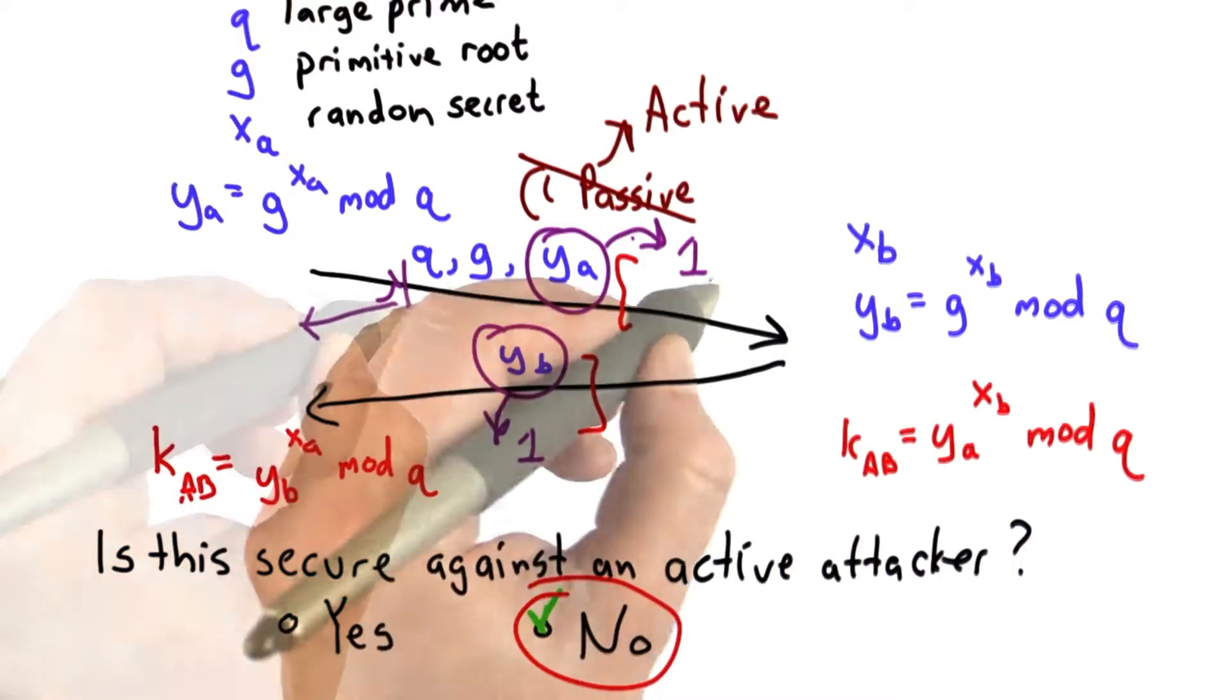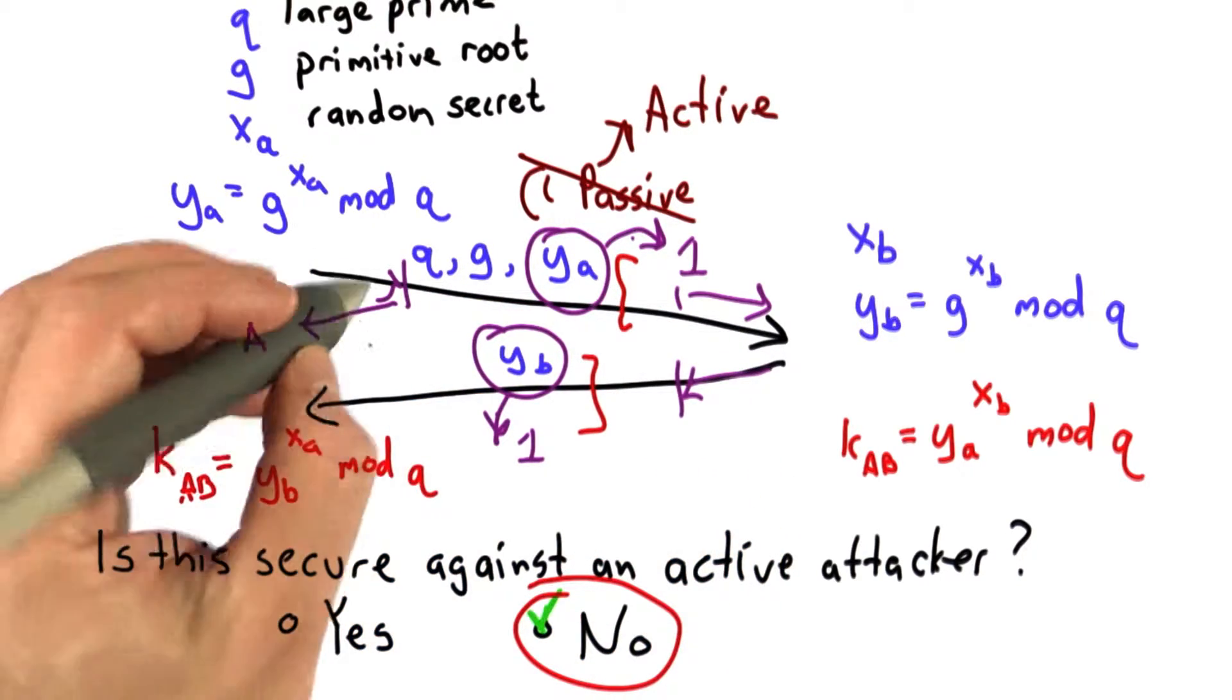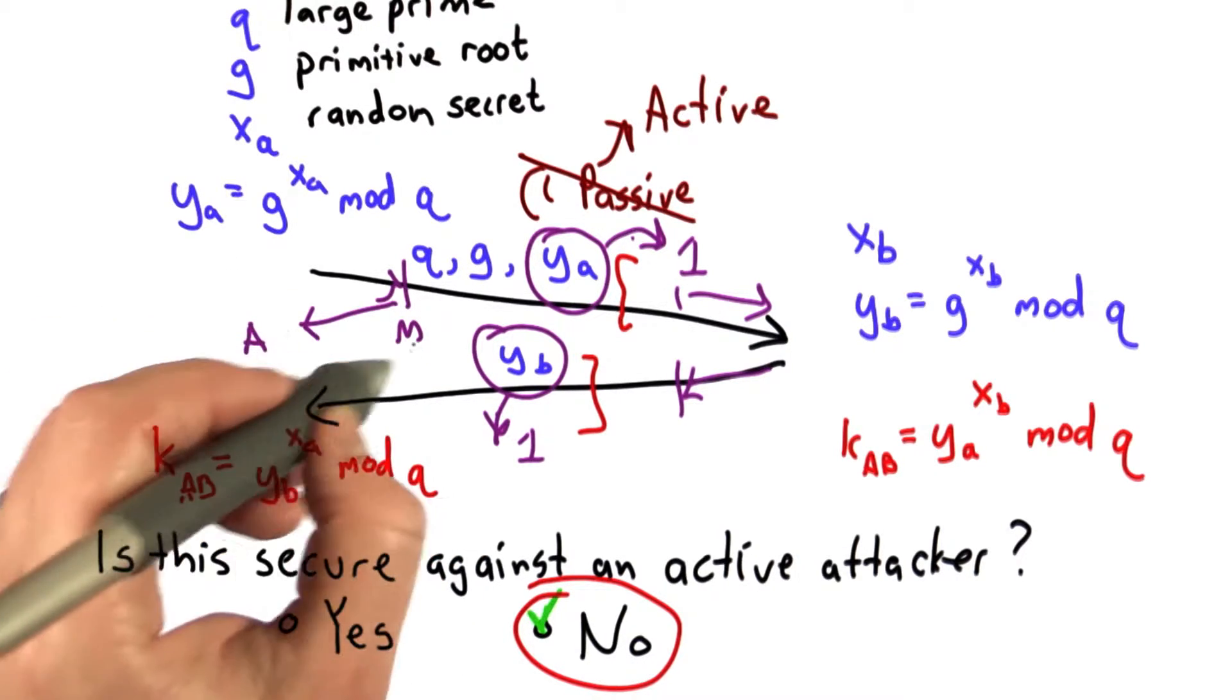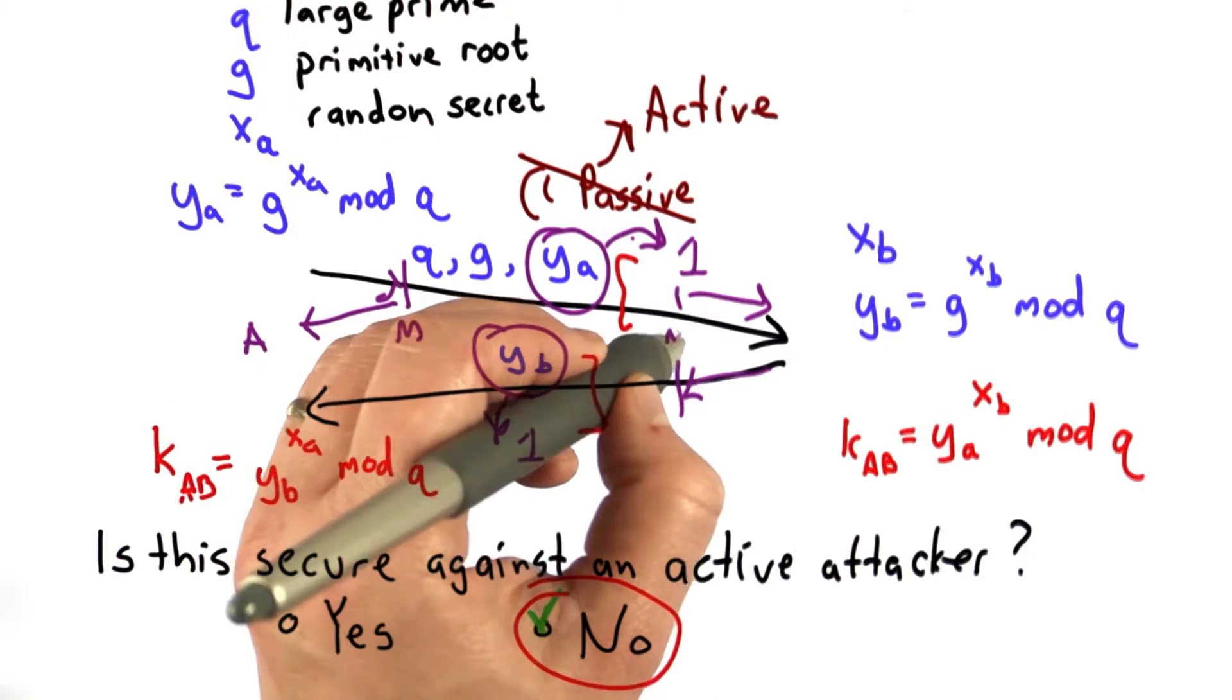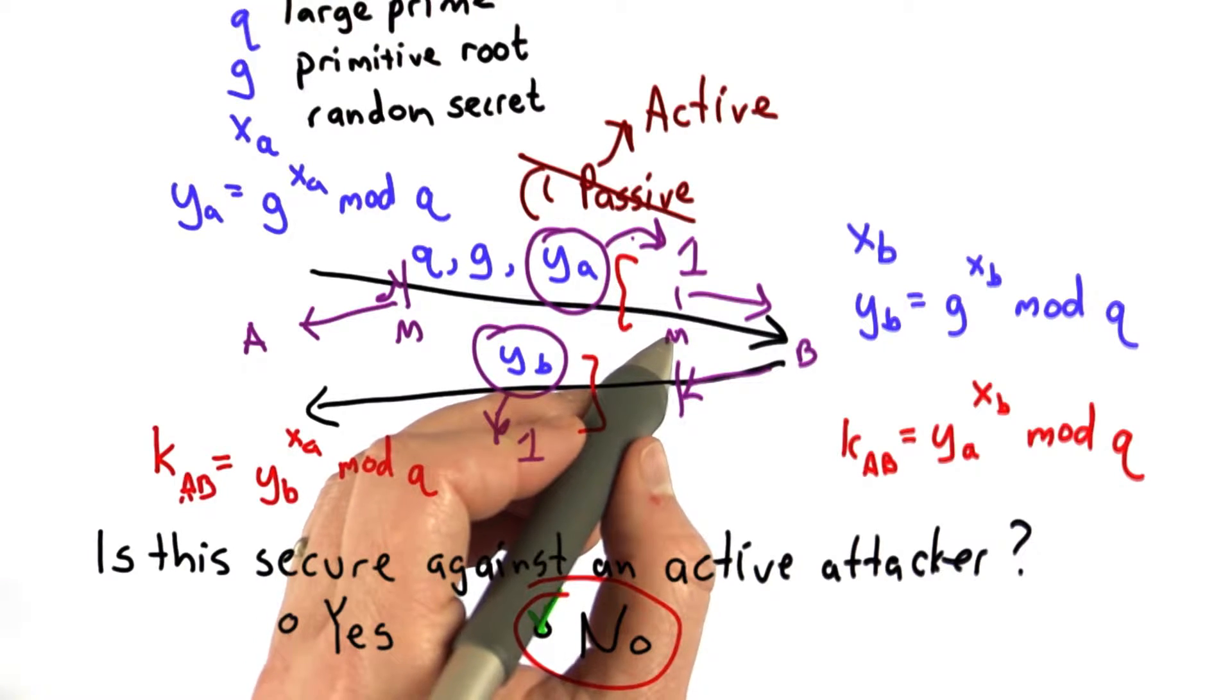The attacker could also intercept the protocol here and separately execute the protocol with each party. This would make Alice think that she has a secure key with Bob, but it's actually a secure key shared with the attacker in the middle. And it would make Bob think that he has a secure key with Alice, but it's actually a key shared with the attacker in the middle.